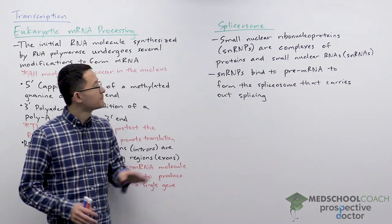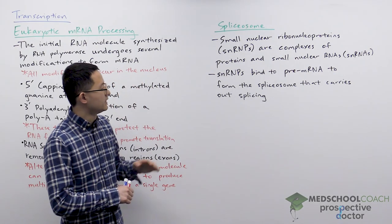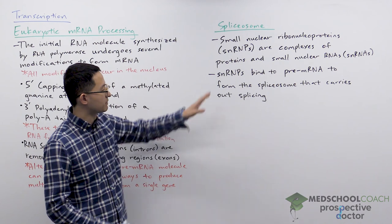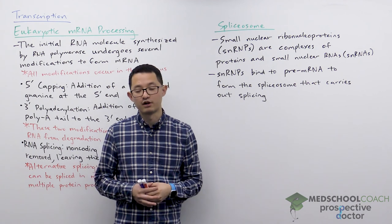Okay so again SNRPs are RNA protein complexes. There are various proteins and the RNA are called small nuclear RNAs. SNRPs will bind to pre-mRNA and when SNRPs bind to pre-mRNA the combined complex is called the spliceosome and the spliceosome is what carries out splicing. All right so as I mentioned just a few different terms you want to be familiar with: SNRPs, SNRNAs, spliceosomes and how these different terms are related.